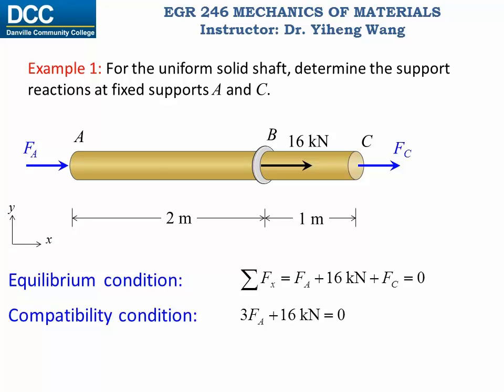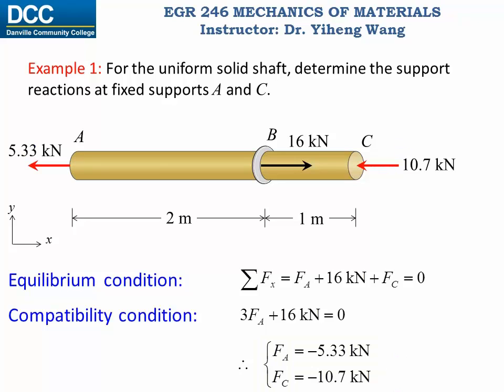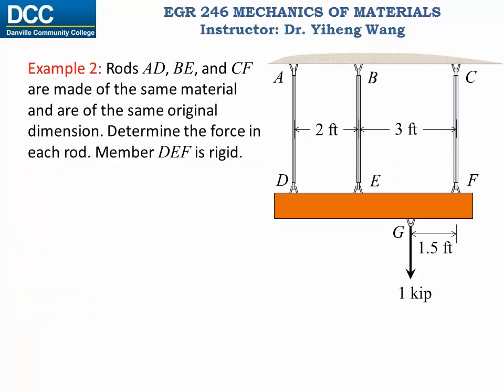Now we have two equations — the first from the equilibrium condition, and the second from the compatibility condition that the total displacement must be zero. Two equations, two unknowns, we can solve for both. The negative signs in the answers indicate the directions of the forces are opposite to what was assumed. Keep in mind that for different problems the compatibility conditions will be different, so it is your job to write the appropriate compatibility condition.